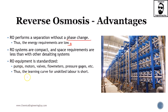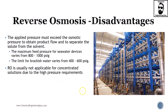RO equipment is fairly standard — you will typically see a pump system, several motors, control valving, flow meters, pressure gauges, controlling systems, and so on. It's similar to a heat exchanger with a shell-and-tube setup: certain fluid goes outside, certain fluid goes inside. The learning curve for an engineer or operator working with this is short and straightforward.